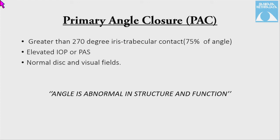In primary angle closure, there is greater than 270 degrees of iridotrabecular contact — approximately 75% of the angle is involved — with elevated intraocular pressure or peripheral anterior synechia, but the disc and visual fields are within normal limits. At this stage, the angle is classified as abnormal in structure and function.